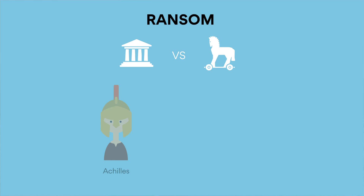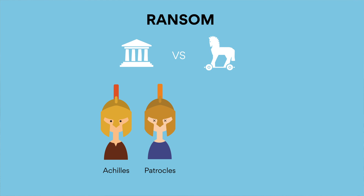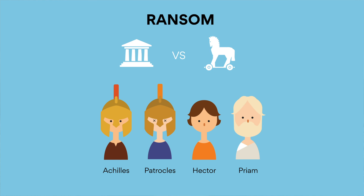Ransom is a novel by Australian author David Malouf, which focuses on a key event in the Trojan War between the Greeks and Trojans. When Achilles, the famed Greek soldier, loses his close friend Patroclus in battle, he seeks revenge on the killer Hector, also the son of Priam, the Trojan King. After he viciously kills Hector, Achilles proceeds to drag Hector's dead body through the dirt surrounding the walled city of Troy, as Priam and his family watch on. Unable to stand this anymore, Priam sets out to ransom his son's body so he can bury it properly.